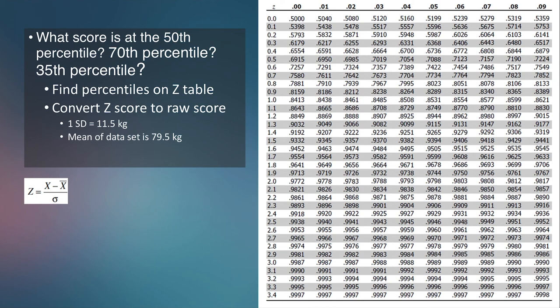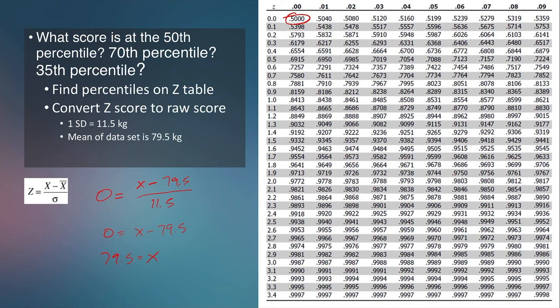What if we want to know the score at a specific percentile? We just work backwards. For the 50th percentile, we find it on the z-table and see that it corresponds to a z-score of 0. So we set the equation equal to 0: 0 equals x minus 79.5 over 11.5. Multiplying both sides by 11.5 and solving gives x equals 79.5, which is just the mean.